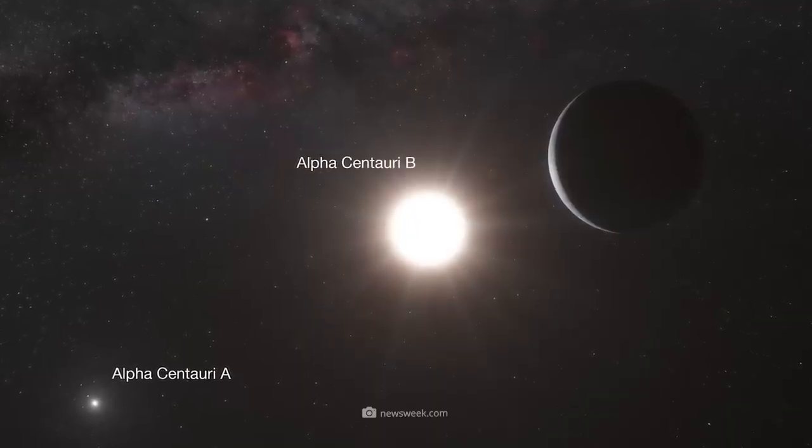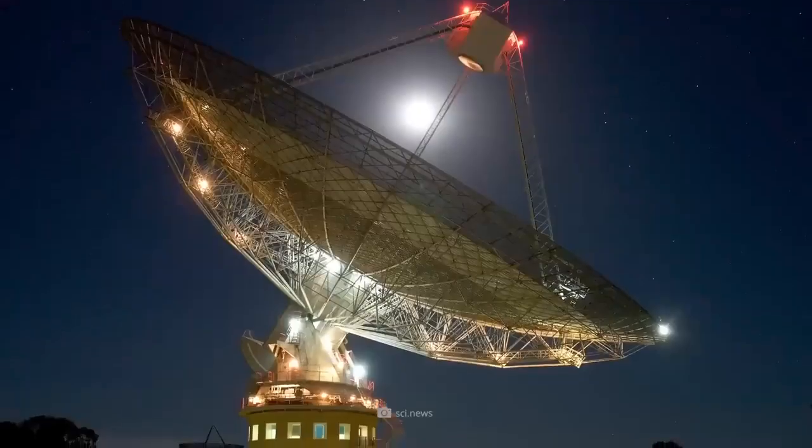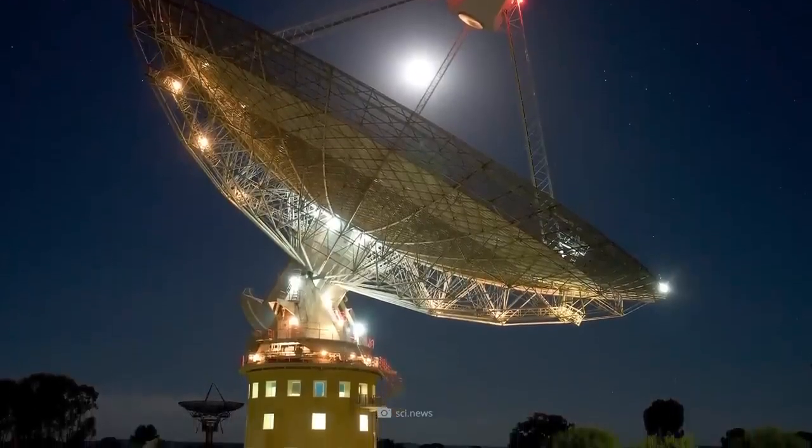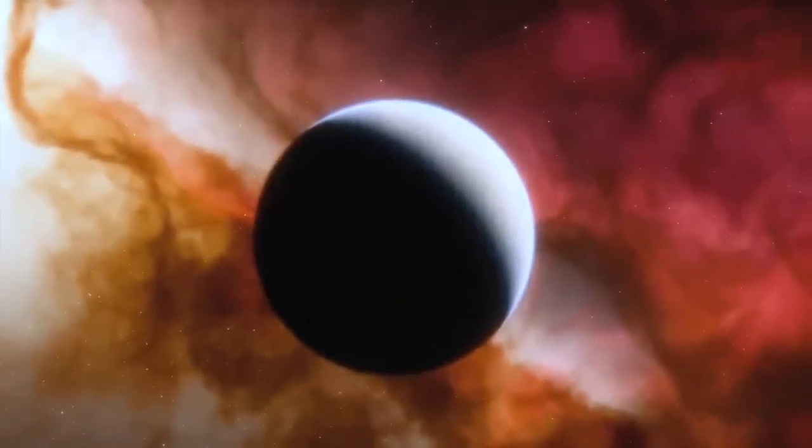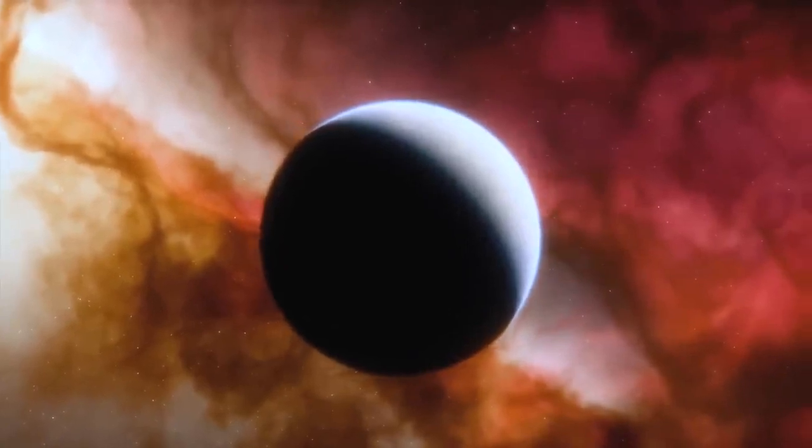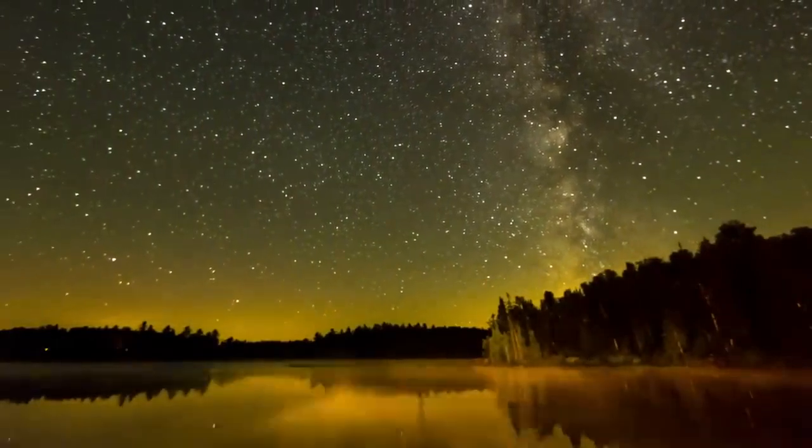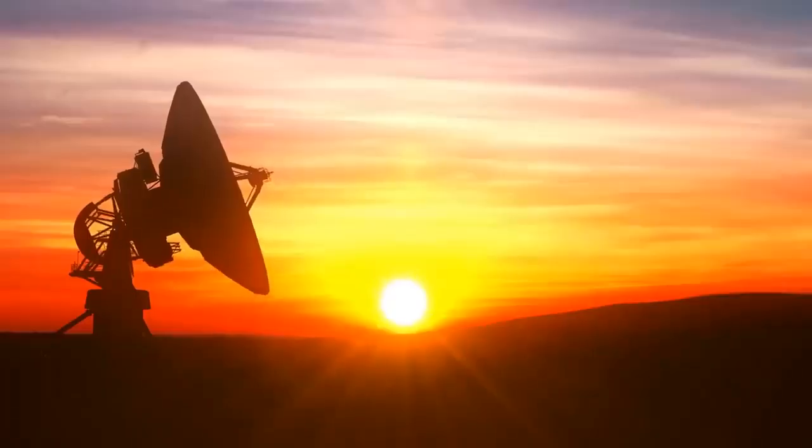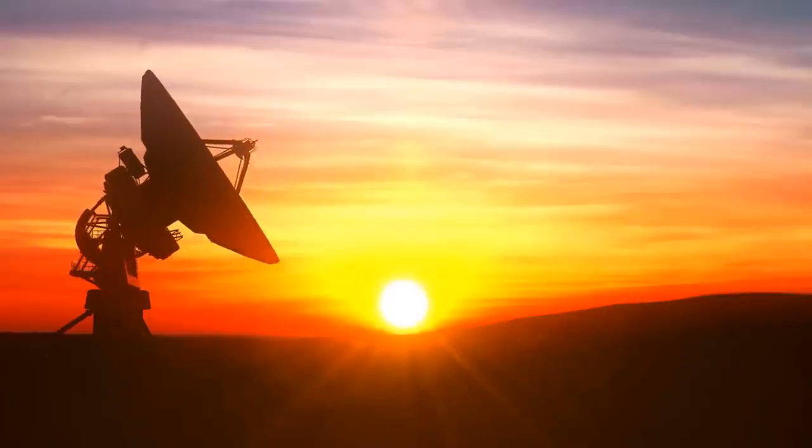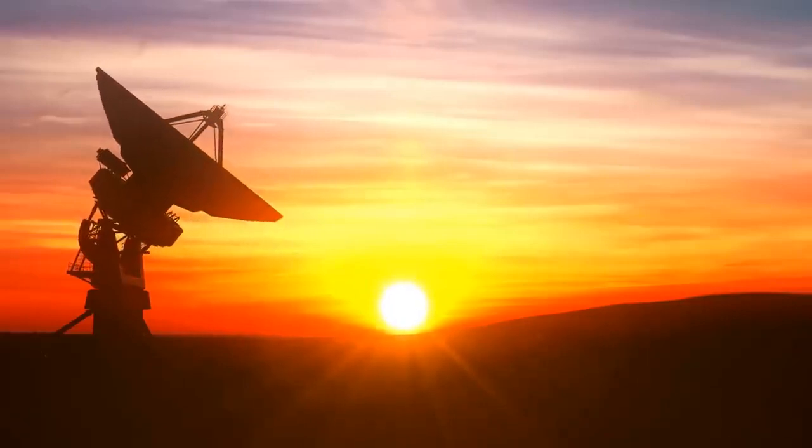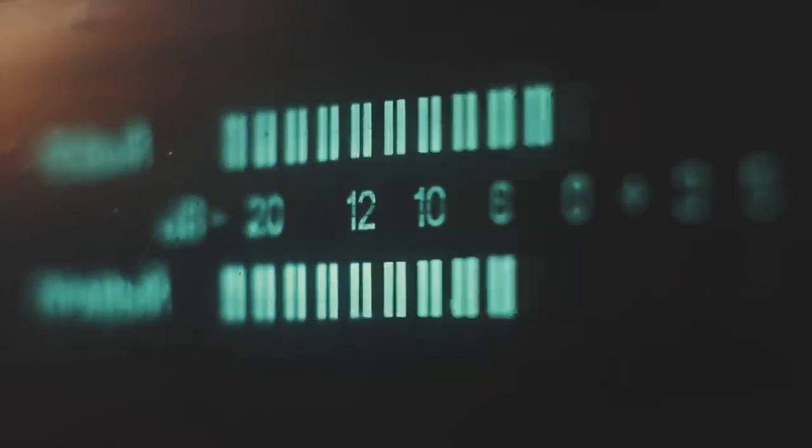With the help of the Parkes Radio Telescope in Australia, the experts wanted to find out what effects these radiation bursts have on the surrounding planets. During the evaluation of the data, which had been collected over a period of 26 hours, Shane Smith, an intern with the SETI program, came across a conspicuous signal with a frequency of exactly 982.002 MHz.